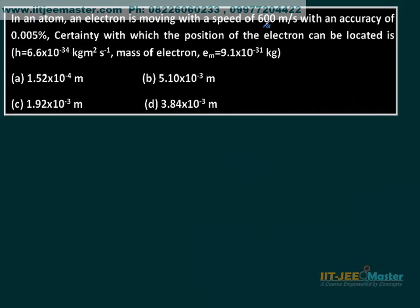In an atom, an electron is moving with a speed of 600 meters per second with an accuracy of 0.005 percent.